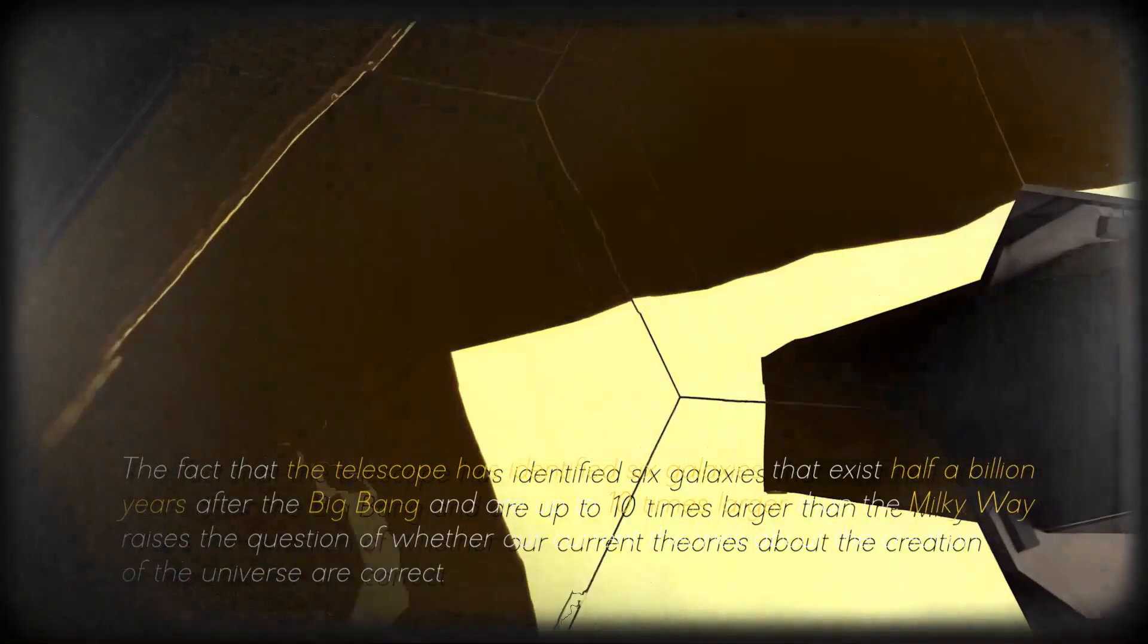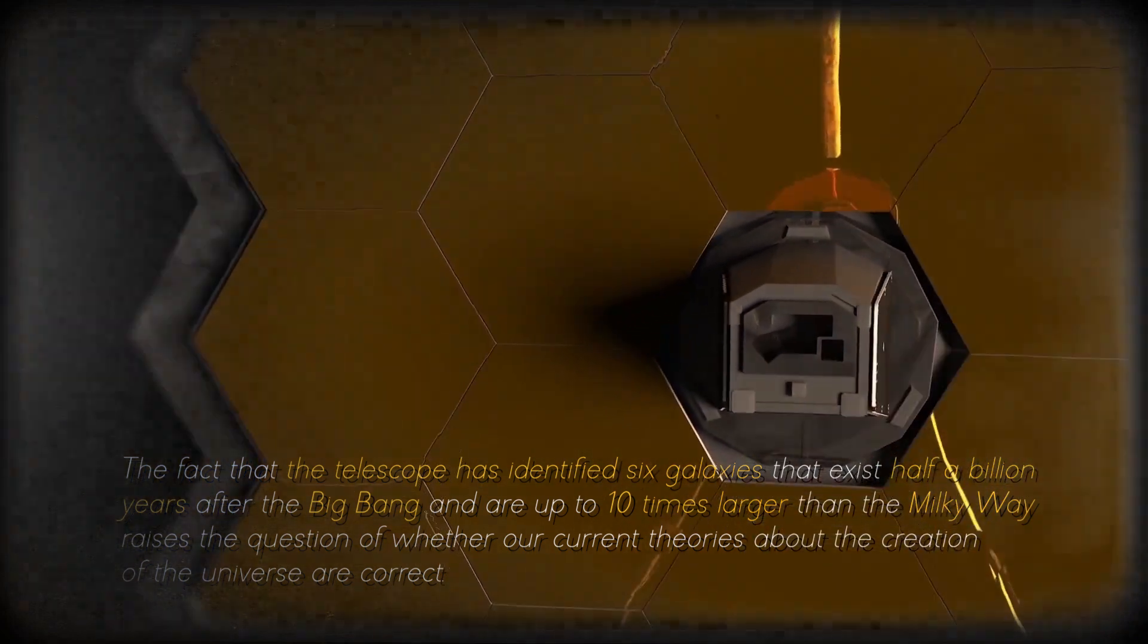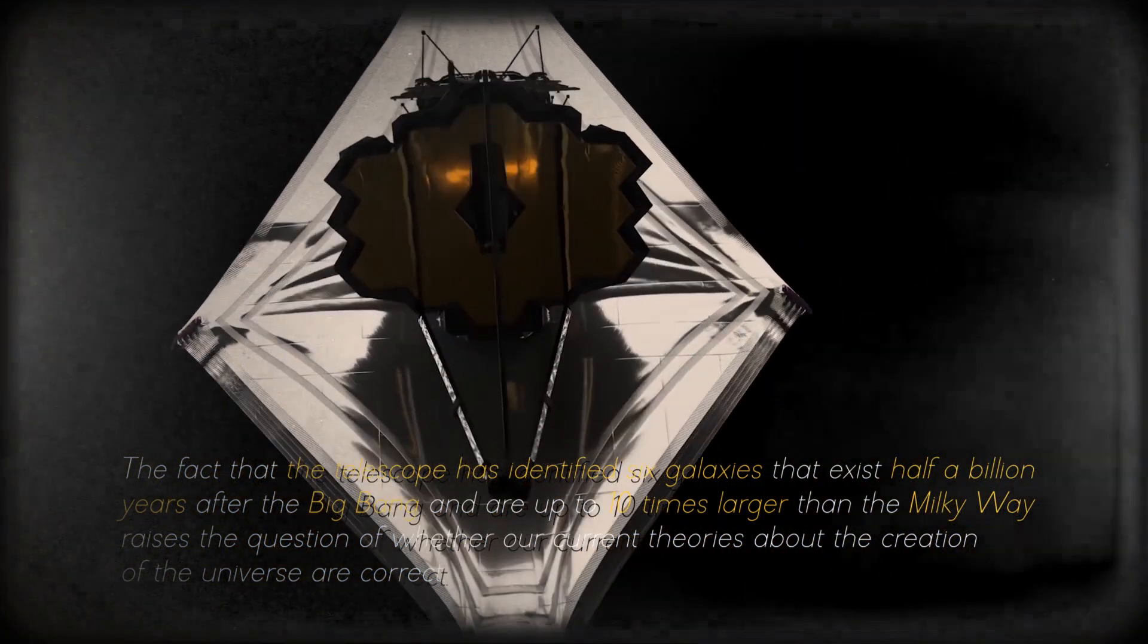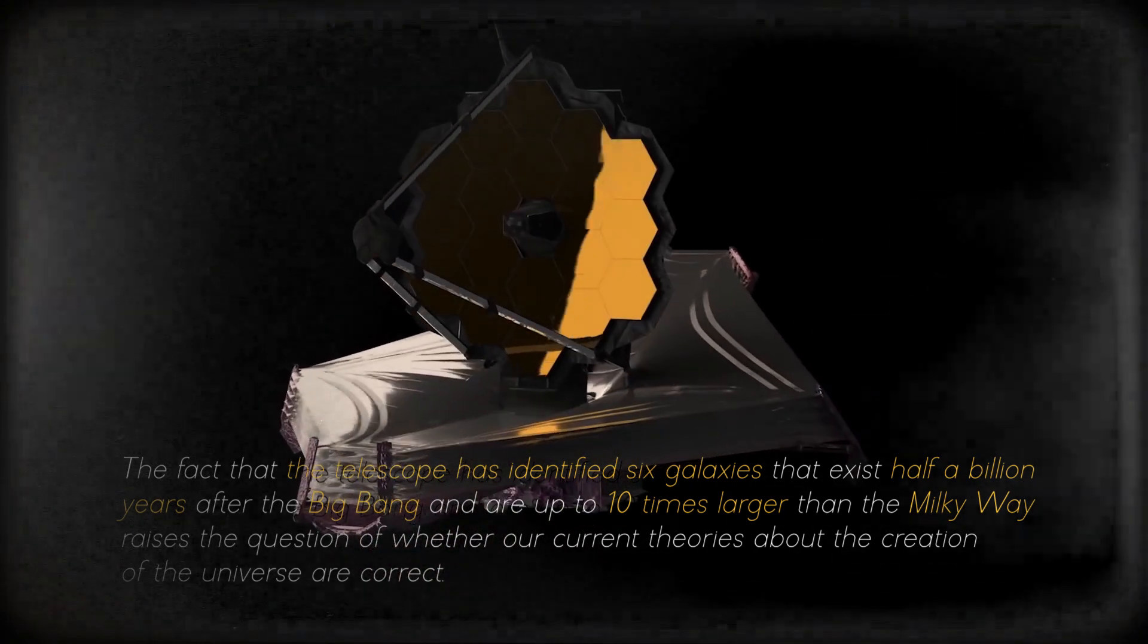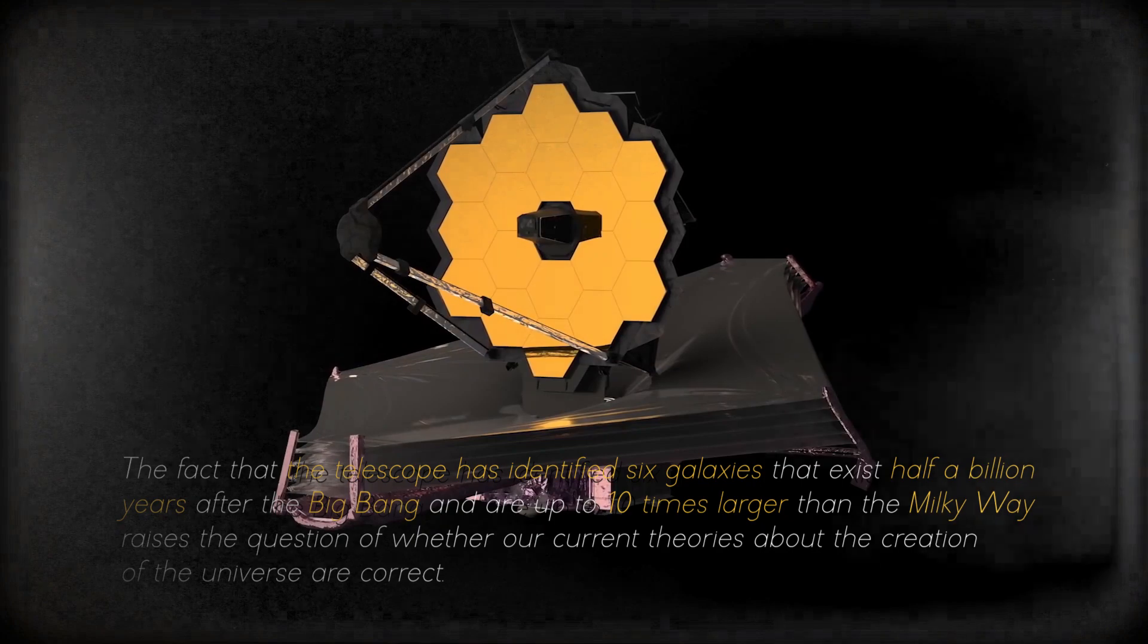The fact that the telescope has identified six galaxies that exist half a billion years after the Big Bang and are up to ten times larger than the Milky Way raises the question of whether our current theories about the creation of the universe are correct. Kaku explained that it takes billions of years to create a galaxy like the Milky Way, so it is strange to find such large, young, primordial galaxies.